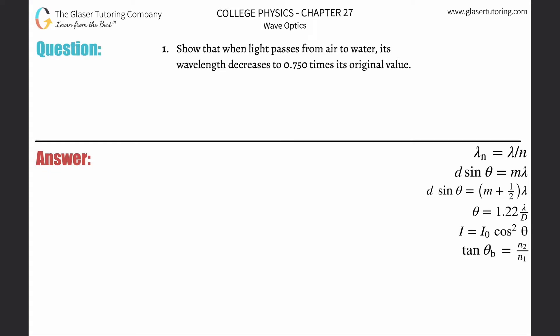Number one, show that when light passes from air to water, its wavelength decreases to 0.75 times its original value.